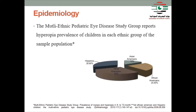The epidemiology of hypermetropia varies according to the definition and prevalence criteria. In the multi-ethnic pediatric eye disease study group, different prevalence rates were reported by ethnic group: Hispanic 26.9%, Asian American 13%, White Americans 25%, and African American 20.8%.